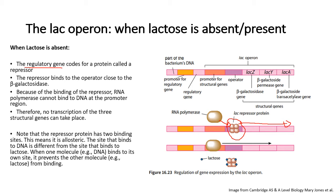It is important to note that the repressor has two binding sites — what we call allosteric, if you remember from our enzymes chapter. It has a binding site where it attaches to the operator, but it also has a different binding site for lactose, and that plays a key role in the expression of the lac operon.